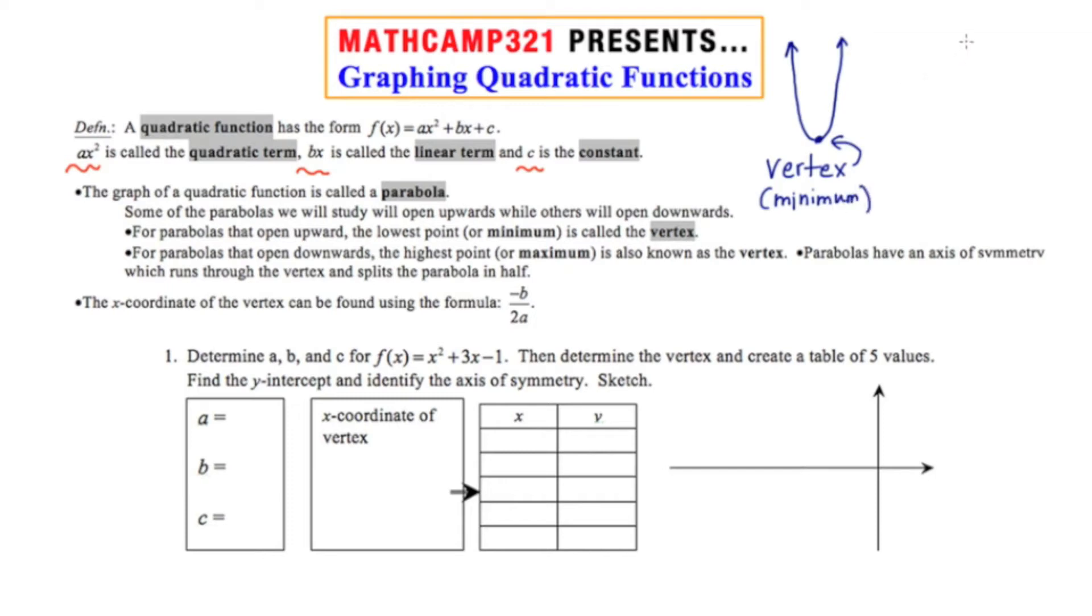Now some parabolas open downward, and I'm going to draw an example of that right now. Again this point here at the top is called the vertex, but now because it's the highest point on the purple graph, we're going to refer to it as the maximum value.